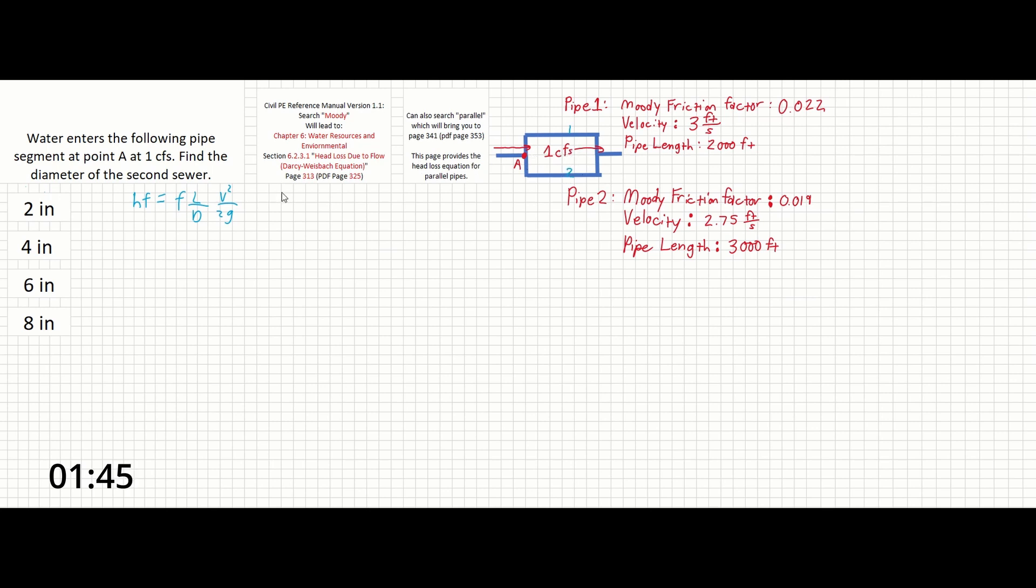So let's start by filling out the equations listed on page 341 for the parallel pipe. The first thing it shows is that the head loss total equals fa times length a times diameter a times